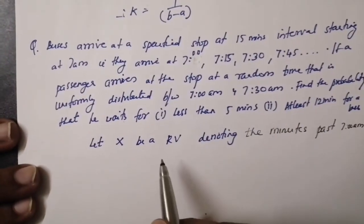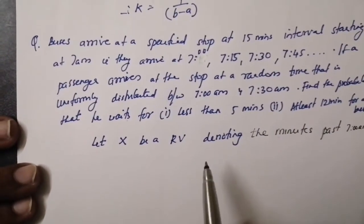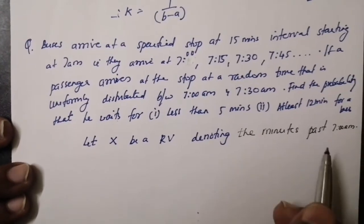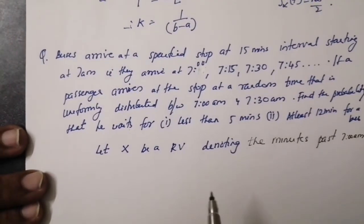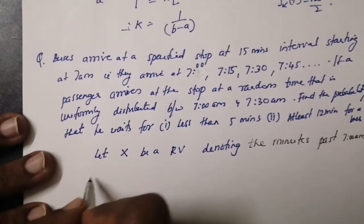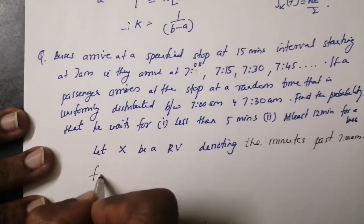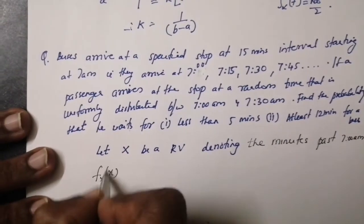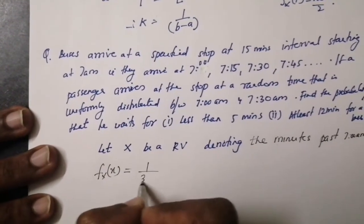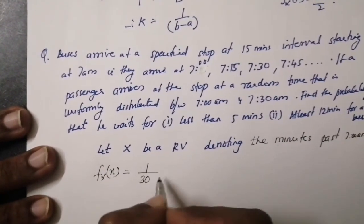Let X be a random variable denoting the minutes past 7 am. The PDF f_X(x) is 1/30 for 0 ≤ x ≤ 30.